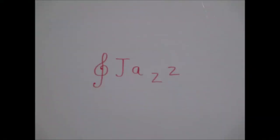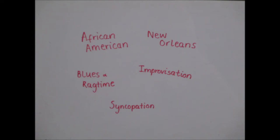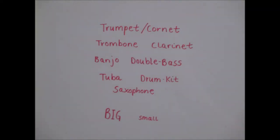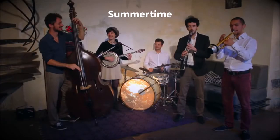Next, Jazz. Jazz has African-American origins. It came from New Orleans and also has a little bit of a footing in blues and ragtime. It focuses on improvisation and syncopation. Jazz instruments include the trumpet or the cornet, the trombone, clarinet, banjo, double bass, tuba, drum kit and of course the saxophone. Jazz bands can be big or small. Here are a few examples for you to listen to.